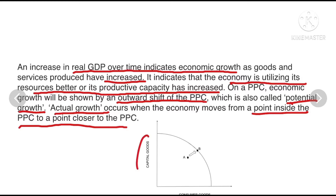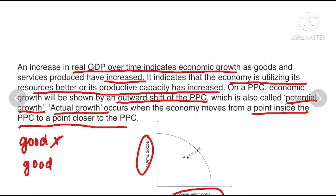In this PPC diagram, you have capital goods on one axis and consumer goods on the other — though you could also label them good X or good Y. The economy starts at point A, and due to an increase in economic growth, it moves to point B.